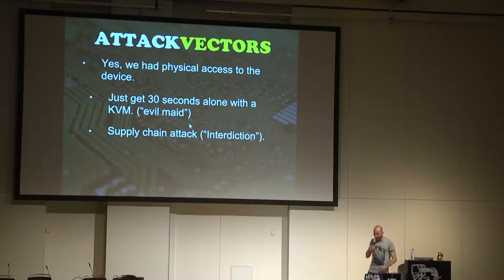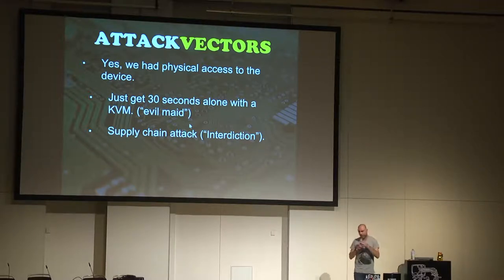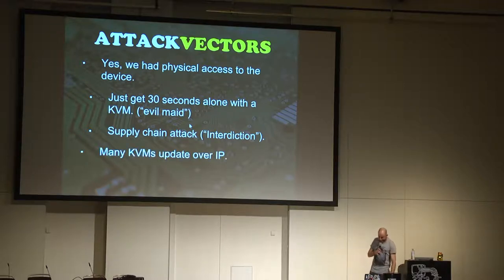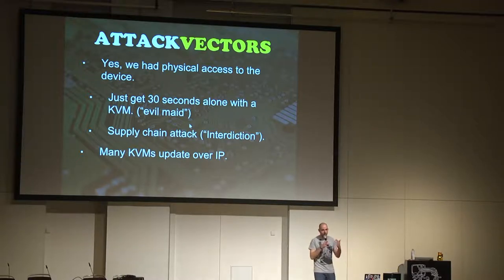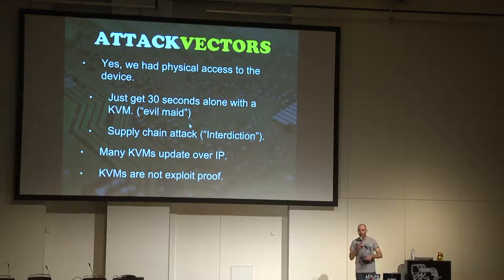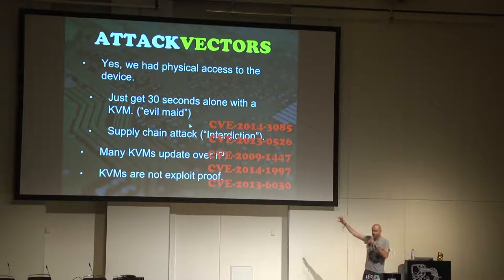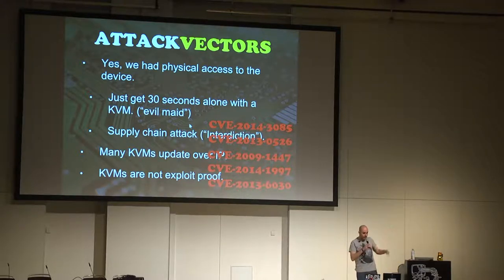What are the attack vectors? Some of you might be asking: you need physical access to the KVM. That's right — and with physical access, we have two reliable vectors. One: give me 30 seconds alone with your KVM, and that's it. Two: attack the supply chain — the seller of the seller of the seller who sells you the KVM. We can just switch it and you get a malicious KVM right out of the box. Additionally, many KVMs can be upgraded through IP, which means we could theoretically exploit this remotely. KVMs are really not exploit-proof — there are existing CVEs related to KVMs upgraded via Ethernet and IP.